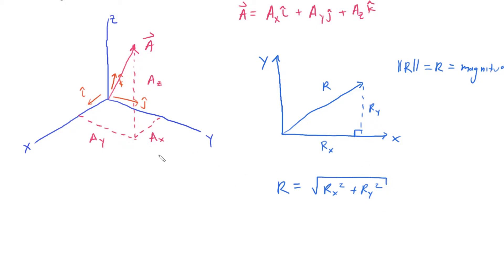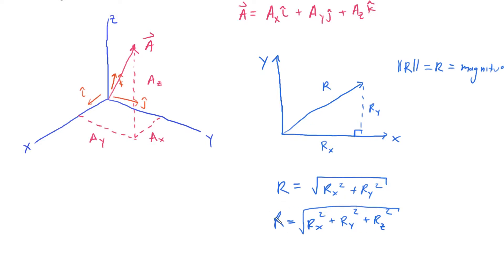We can extrapolate this idea into three dimensions by simply adding another term. The more general case: if we have all three components instead of just x and y, we add the az term and take the square root. I'll post a video with the mathematical derivation later. This general formula reduces to the 2D version when rz equals zero.